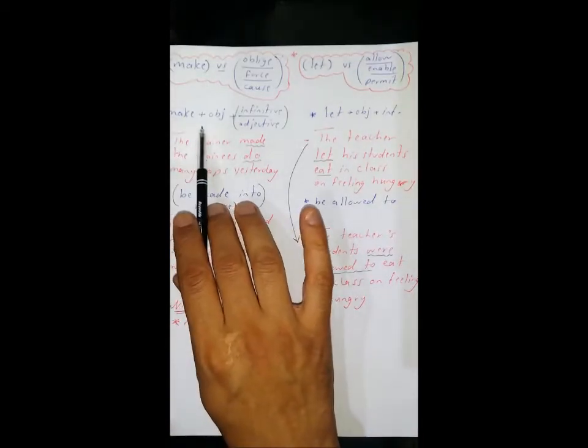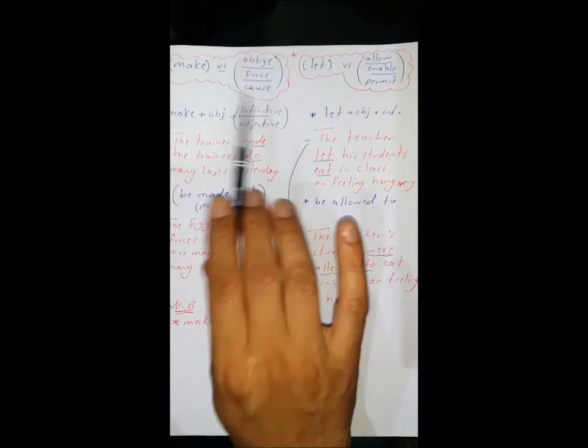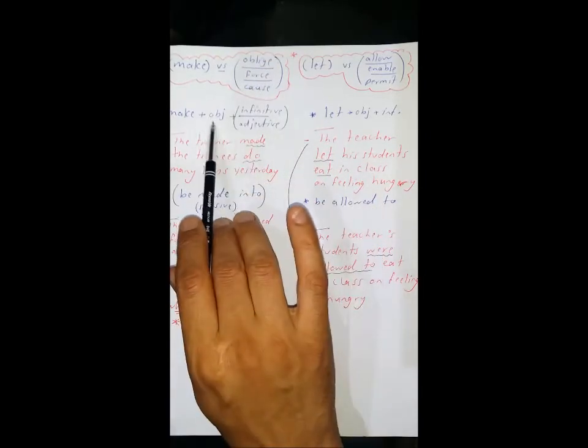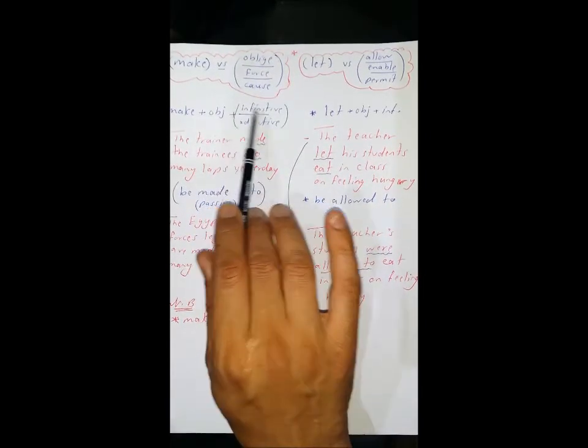Make is followed by object plus infinitive or adjective, but oblige, force, and cause are followed by object with to plus infinitive.